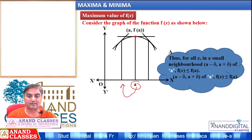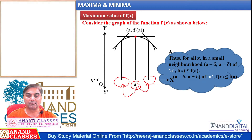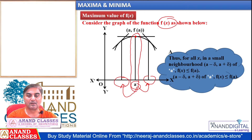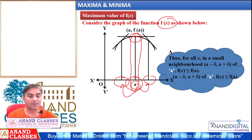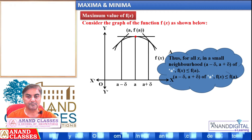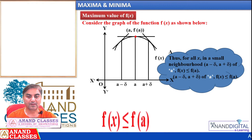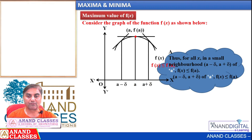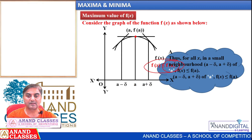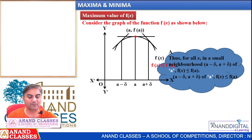At point a, whether the value is less or greater, the answer f(a) is what we get for f(x) at point a — and that is the maximum. So f(x) ≤ f(a), meaning f(a) is the maximum value of f(x).